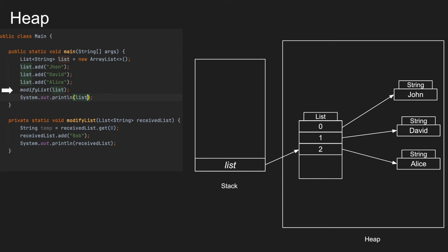When we execute the next line, which is the function call to modifyList, control goes to the modifyList function. A new variable, receiveList, is created inside the stack pointing to the same list object. The important thing to note here is we are just creating a new variable that receives a copy of the list reference, not a new list object. We are not creating any new object — we are just passing the copy of the reference.